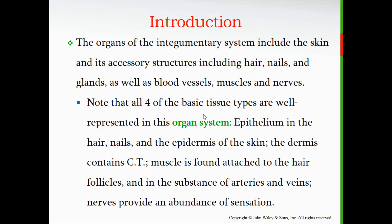You also find some very small muscles embedded within the skin. Because this is a system, it's going to be made up of different organs, and those organs will be made up of different tissues. We've just come off the tissues unit, so that should be fresh in our minds — meaning all four basic tissue types are well represented in this organ system.